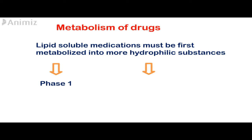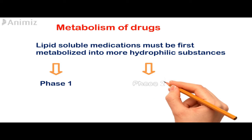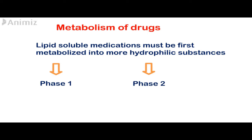Lipid-soluble drugs are reabsorbed in the kidney because the kidneys cannot sufficiently eliminate them. Therefore these lipophilic drugs must first be metabolized into more hydrophilic drugs using two sets of reactions: phase 1 and phase 2 metabolism.